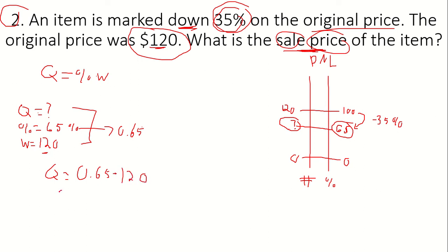Now, if we multiply this out, we're going to get that our quantity is going to equal 78. So, if an item is marked down by 35% of the original price, the original price is $120. That means the sale price is going to be $78.